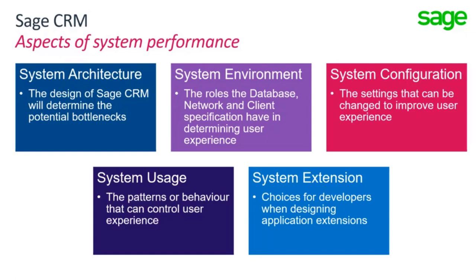In this short training session we're looking at different aspects of system performance. We can identify these as factors to do with the architecture itself — the reality of Sage CRM as a piece of software, its design, and how that design implies certain areas that become question marks when investigating a performance issue. Then there are general system environment issues where we have a three-tier architecture: the database layer, the application layer (including the network transport layer), and the presentation layer on the client machine.